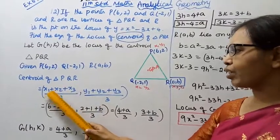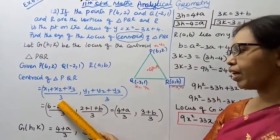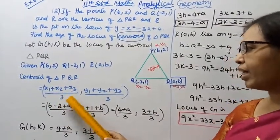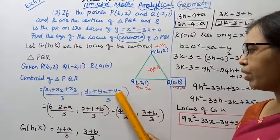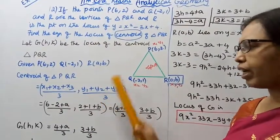The centroid of triangle PQR is given by the formula: x1 plus x2 plus x3 by 3, and y1 plus y2 plus y3 by 3.